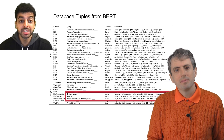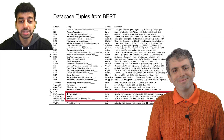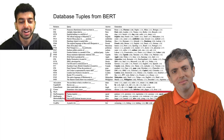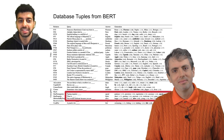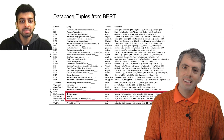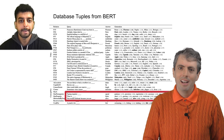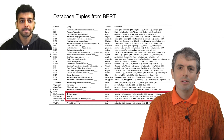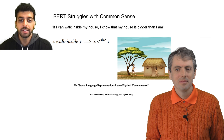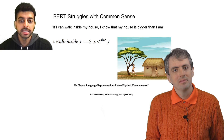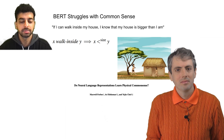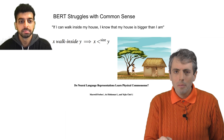We should be suspicious of any language model that doesn't complete 'you should celebrate because you are' with 'studying computational linguistics.' Is there anything that it can't do? Does it know common sense? That does seem to be a problem. For instance, it cannot infer that if x can walk inside y, then x has to be smaller than y.